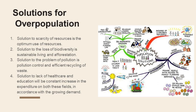Now for solutions to overpopulation. The solution to scarcity of resources is the optimum use of resources. The solution to biodiversity loss can be through sustainable living and afforestation. The solution to pollution is pollution control and efficient recycling of waste. The solution to the lack of healthcare and education would be constant increase in expenditure in both fields in accordance with growing demand. We've also given examples of countries across the world which have adopted very successful measures for solving the problem of overpopulation.